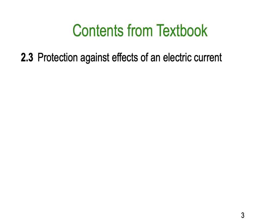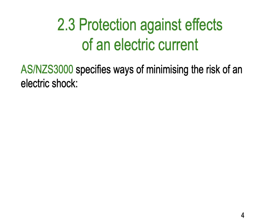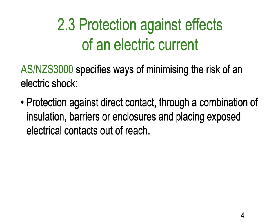Protection against the effects of electrical current — this is section 2.3, our recommended textbook being Electrical Principles by Philips. AS3000, which is the Australian standard for all electrical work, specifies ways of minimising the risk of an electric shock. The first is to protect against direct contact through a combination of insulation, barriers and closures, and placing exposed electrical contacts out of reach — what we might call isolation, being able to isolate the electrical energy from anyone being able to touch it.